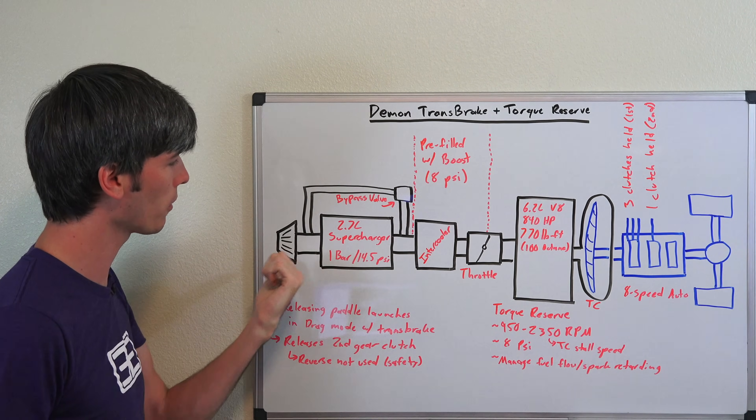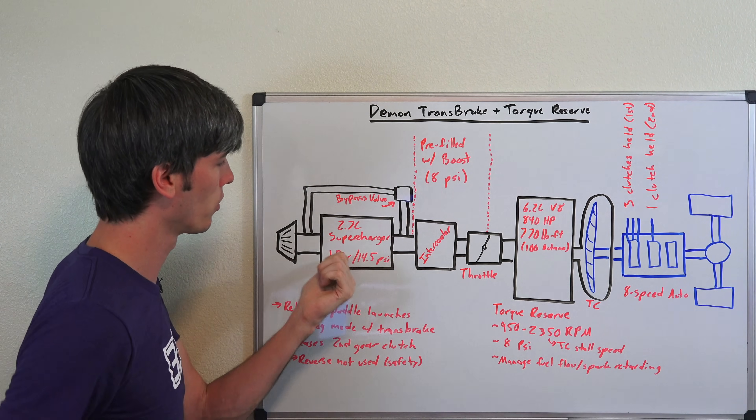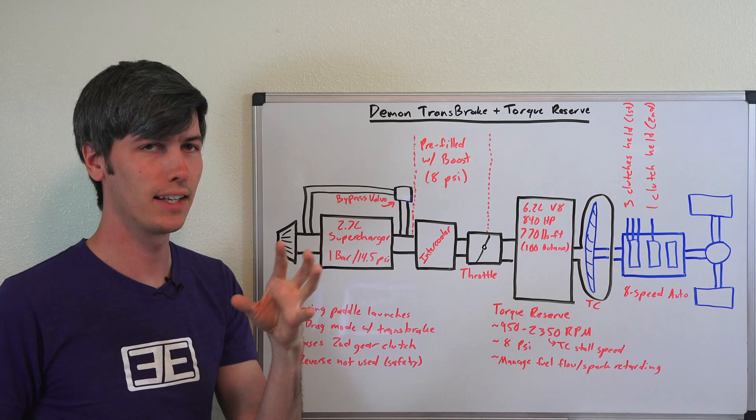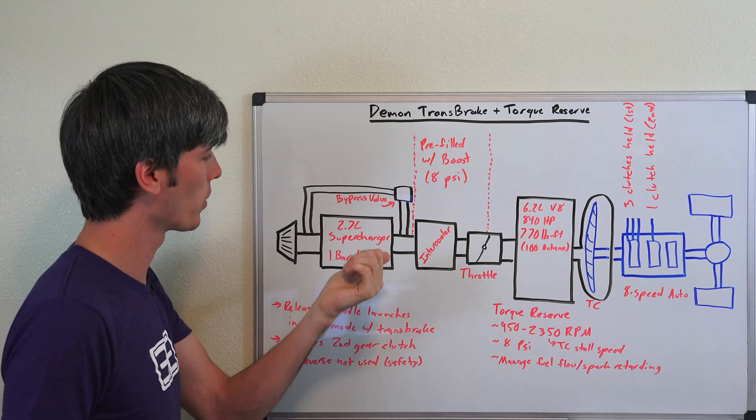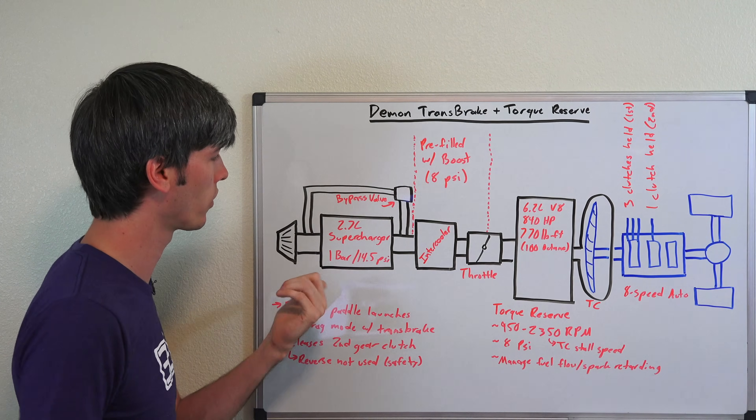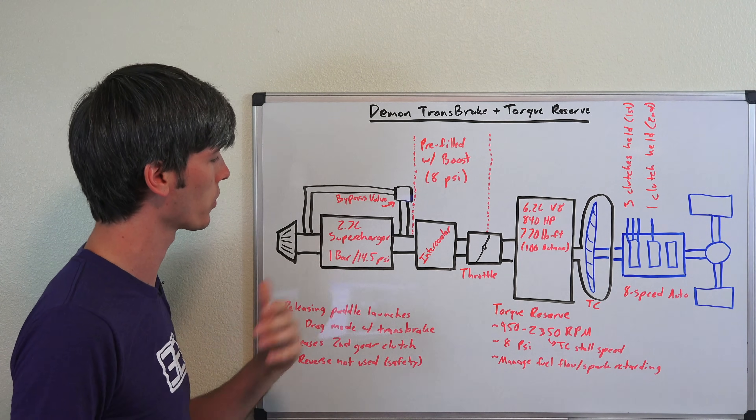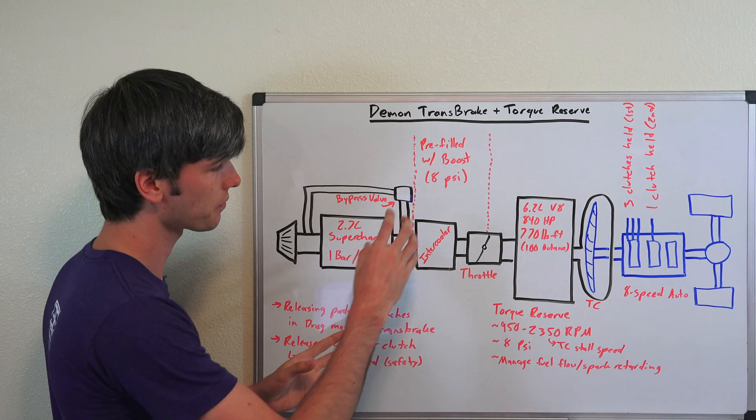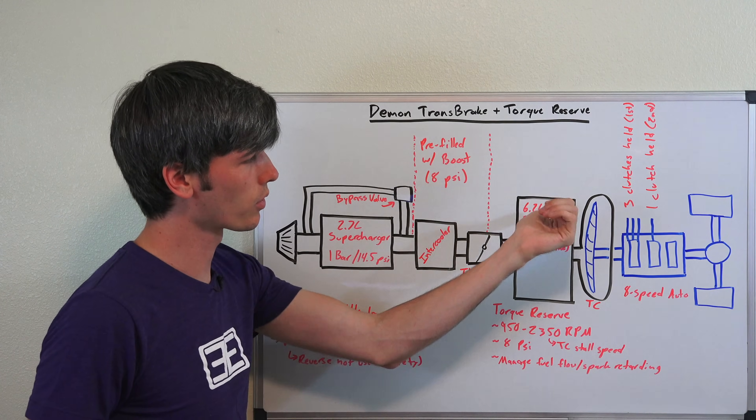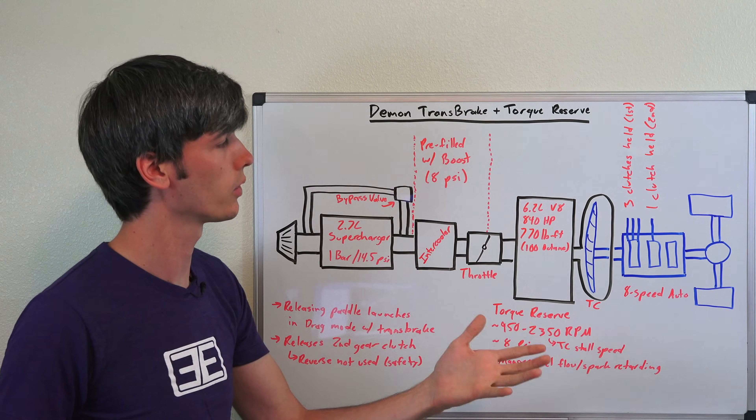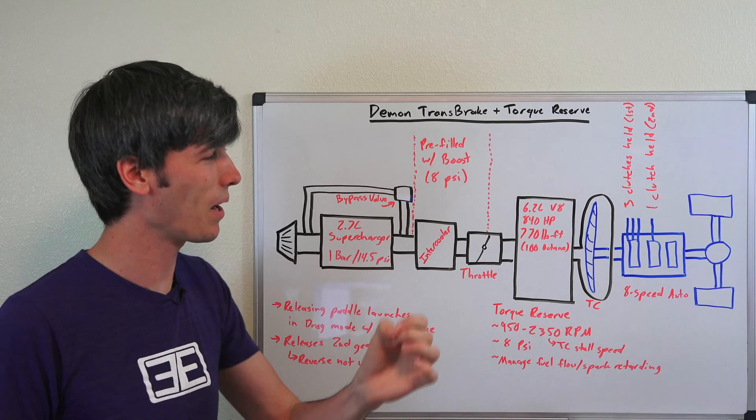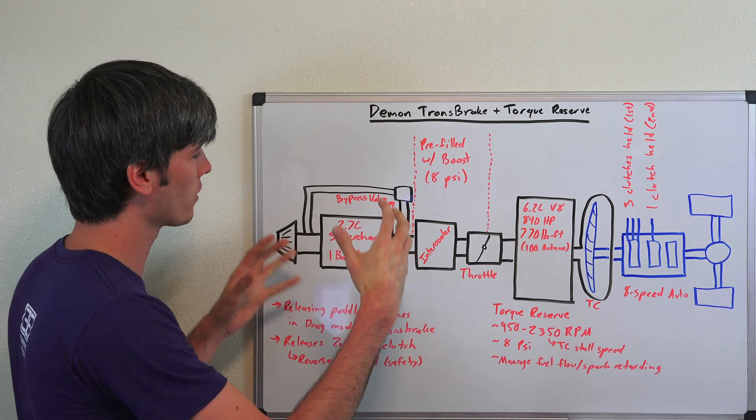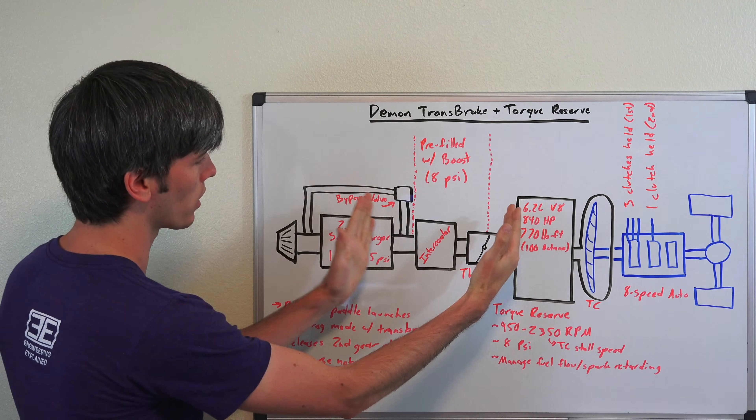You have your air filter that travels through, you're going to pull in that air through a 2.7 liter supercharger. The Hellcat has a 2.38 liter supercharger at 0.8 bar, so this is a 25% increase in boost, 14.5 psi, sending that air into the intercooler, then to the throttle, then into your 6.2 liter V8 engine: 840 horsepower, 770 pound-feet of torque if you're running 100 octane fuel.